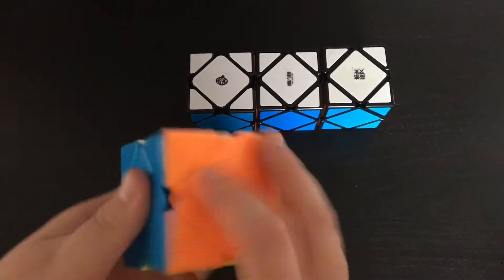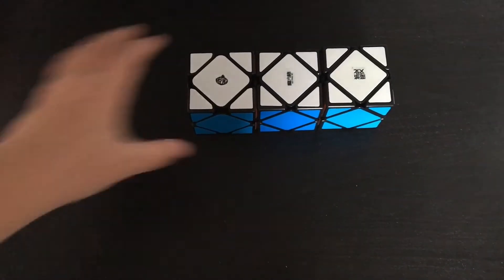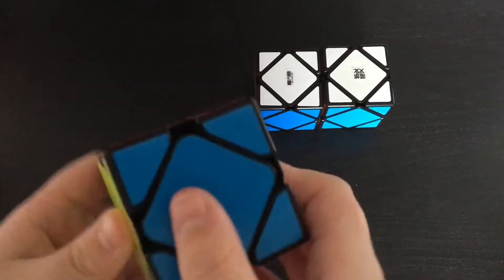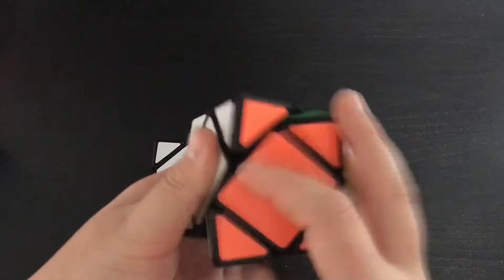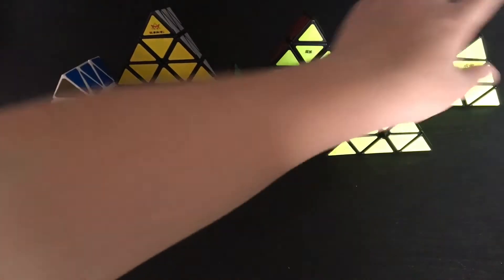These are all my skewbs. I have the Mo Yu Magnetic skewb which is not a bad skewb and it is my main. Kong's Divine skewb, which is my backup main, also a very nice skewb. Original Mo Yu skewb and the original Qi skewb.